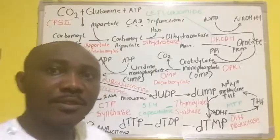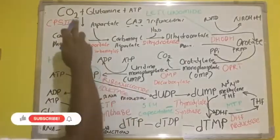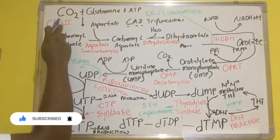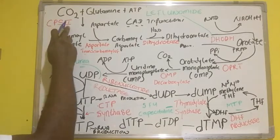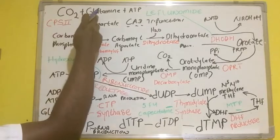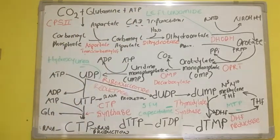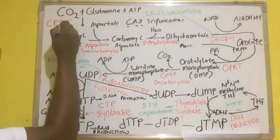Hello everyone, my name is Famous and today I'm going to be starting this topic which is pyrimidine biosynthesis. The reaction begins with a condensation reaction. CPS2, which is carbamoyl phosphate synthetase 2, condenses carbon dioxide, glutamine, and ATP to produce carbamoyl phosphate.